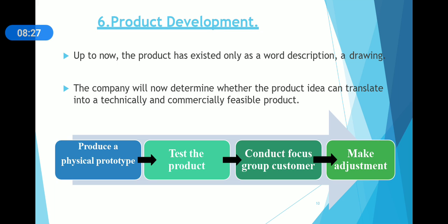Up to now, the product exists only as a word, description, or drawing. The company does not yet know whether the product idea can be translated into a technically and commercially feasible product. In this stage, we take the final decision on whether the product is actually feasible. Through a diagram, we can see where we produce a physical prototype and test the product. Then we conduct focus group sessions with customers and make adjustments. This is basically the final stage before launching the product.